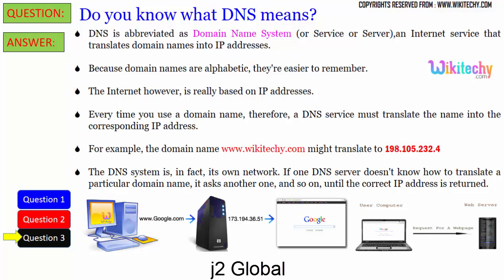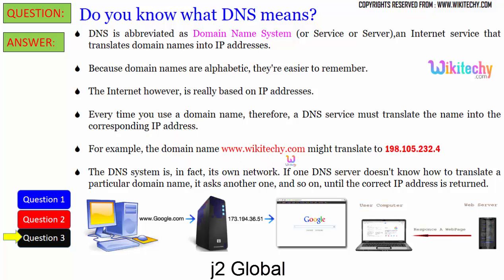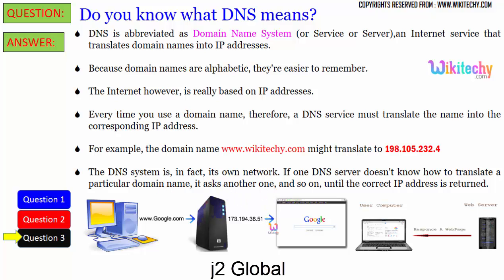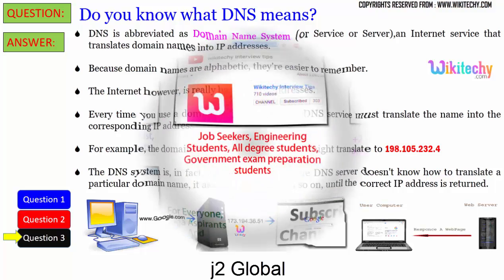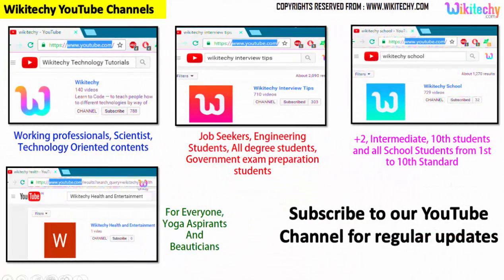Every time you type a domain name, a DNS service must translate it into the corresponding IP address. For example, typing www.wikidiki.com translates into a specific IP address, as shown in the example. A DNS system is its own network — if one DNS server doesn't know how to translate a domain, it asks another, and this continues until the IP address is resolved.